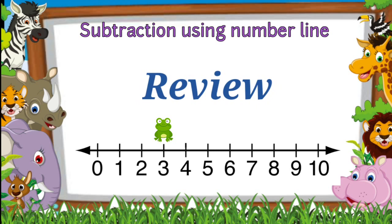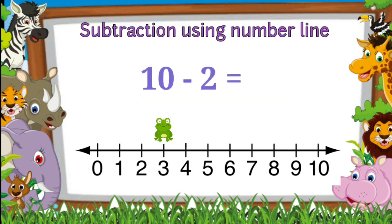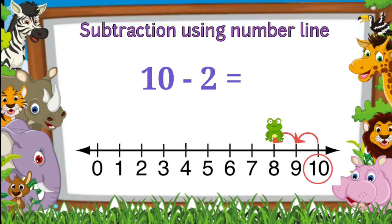Now let's do a quick review. Ten minus two — tell me children, which one is the first number? Yes, ten is the first number. So the frog will start at ten. Which side will it move? It will jump two numbers to the left side. The frog lands on number eight, therefore ten minus two is equal to eight.